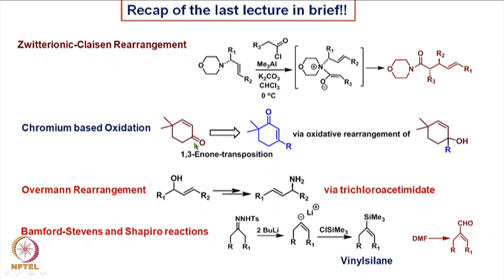Therefore, we had a nice way of converting one enone to the other enone by introducing another substituent at the position where the ketone was present. Also, we looked at the Overman rearrangement, where conversion of an allyl alcohol to the corresponding allylamine via a transposition of the double bond was seen, and it proceeded via trichloroacetamidate.